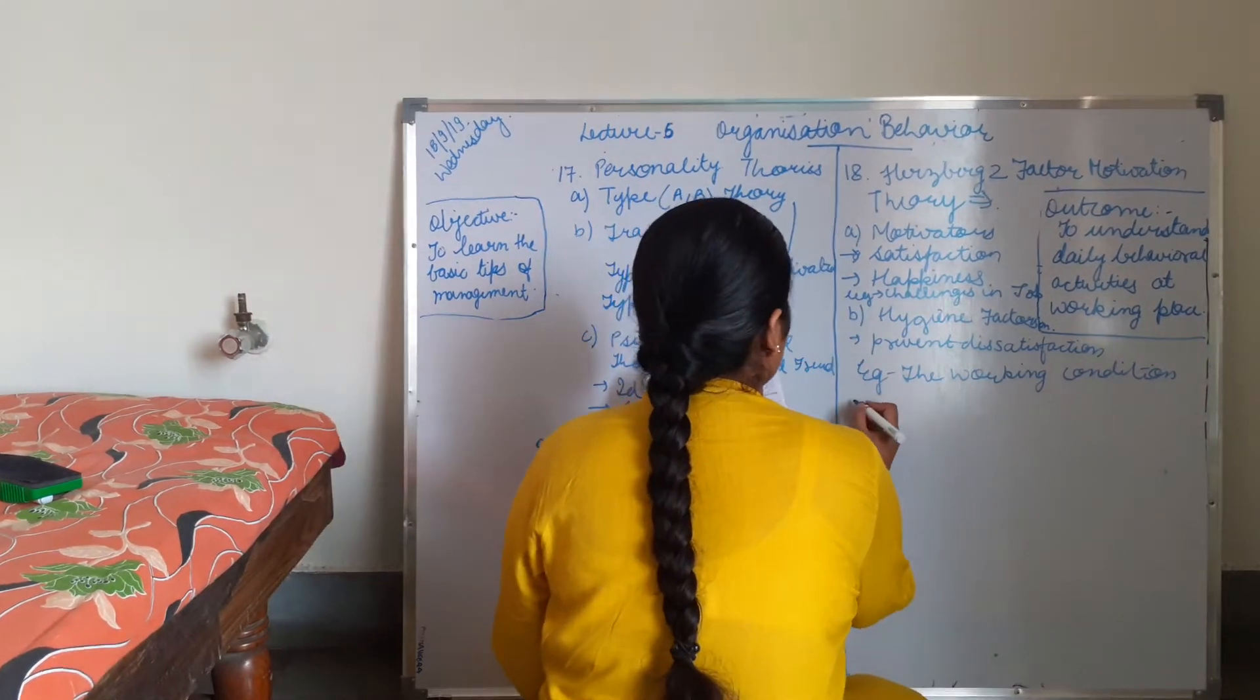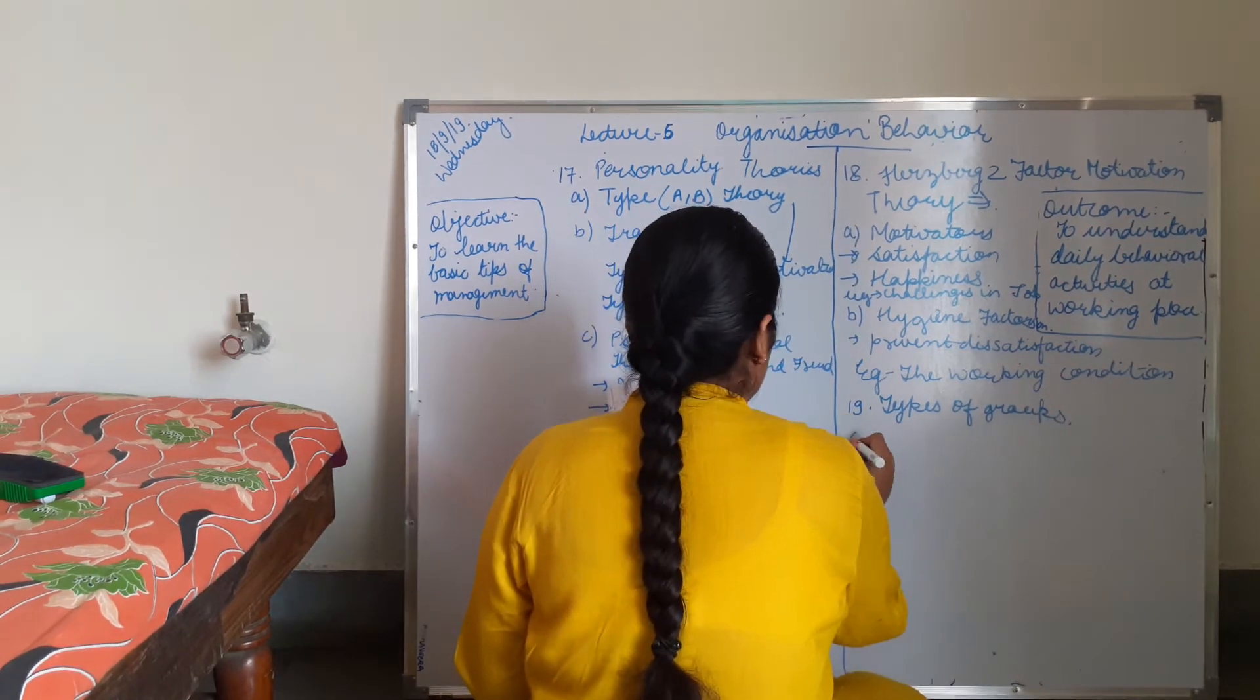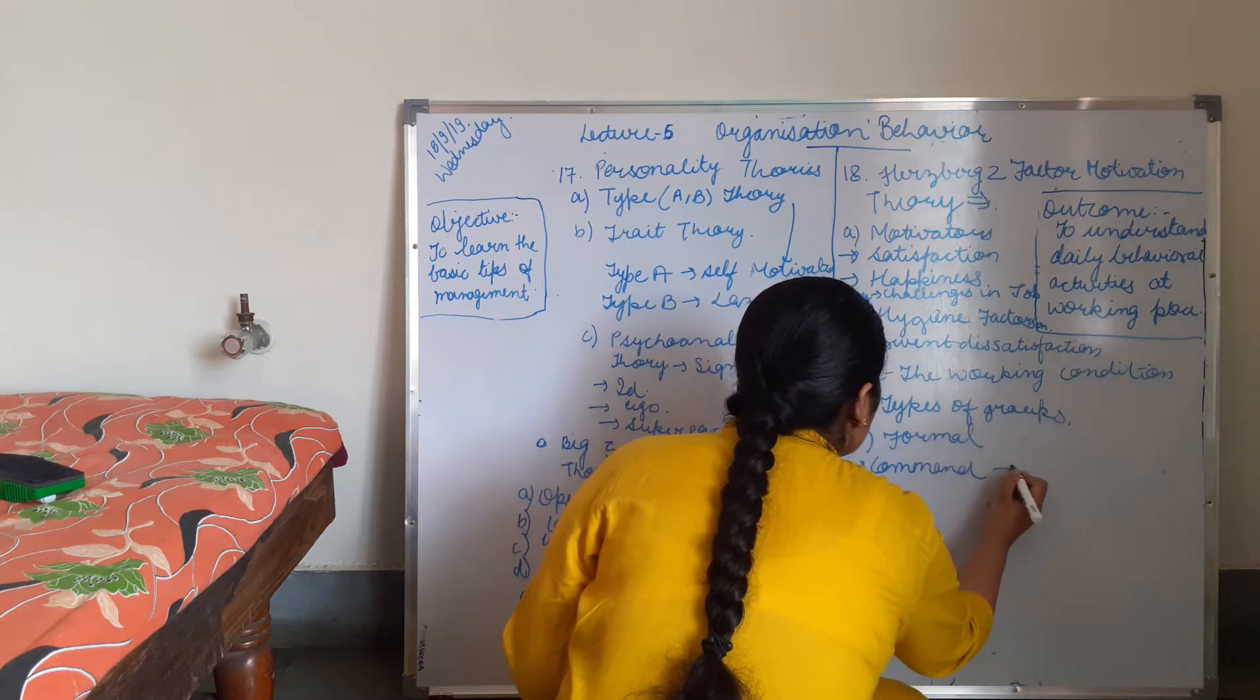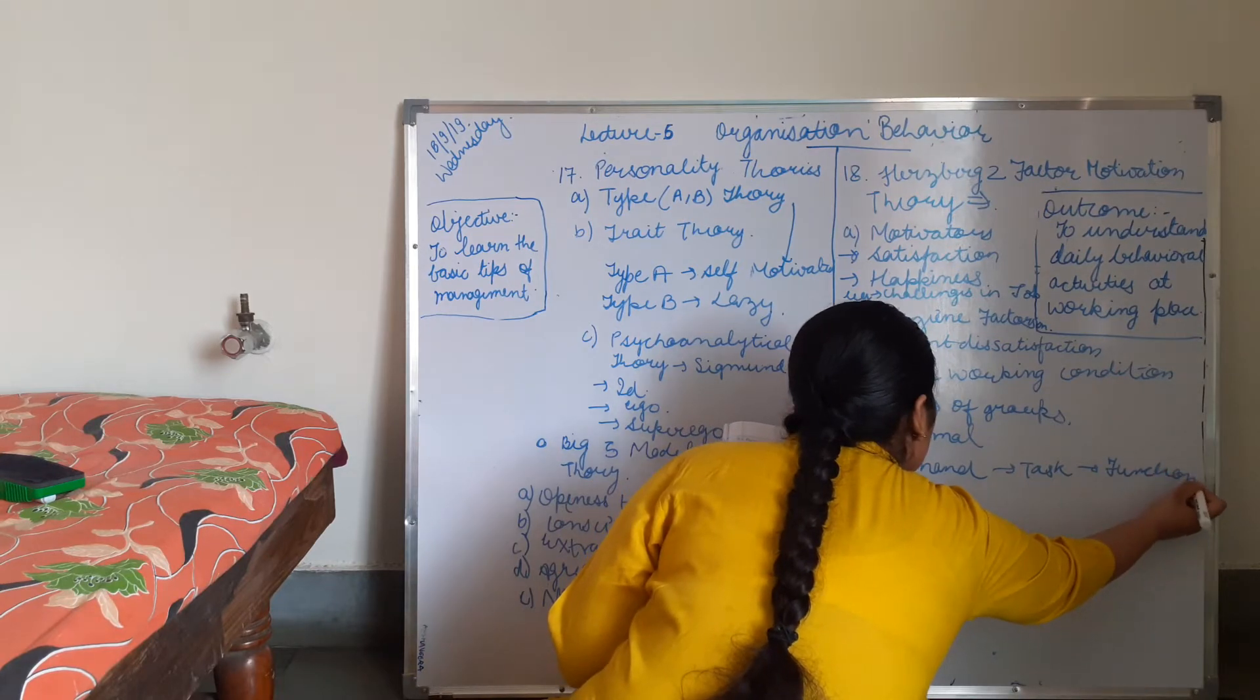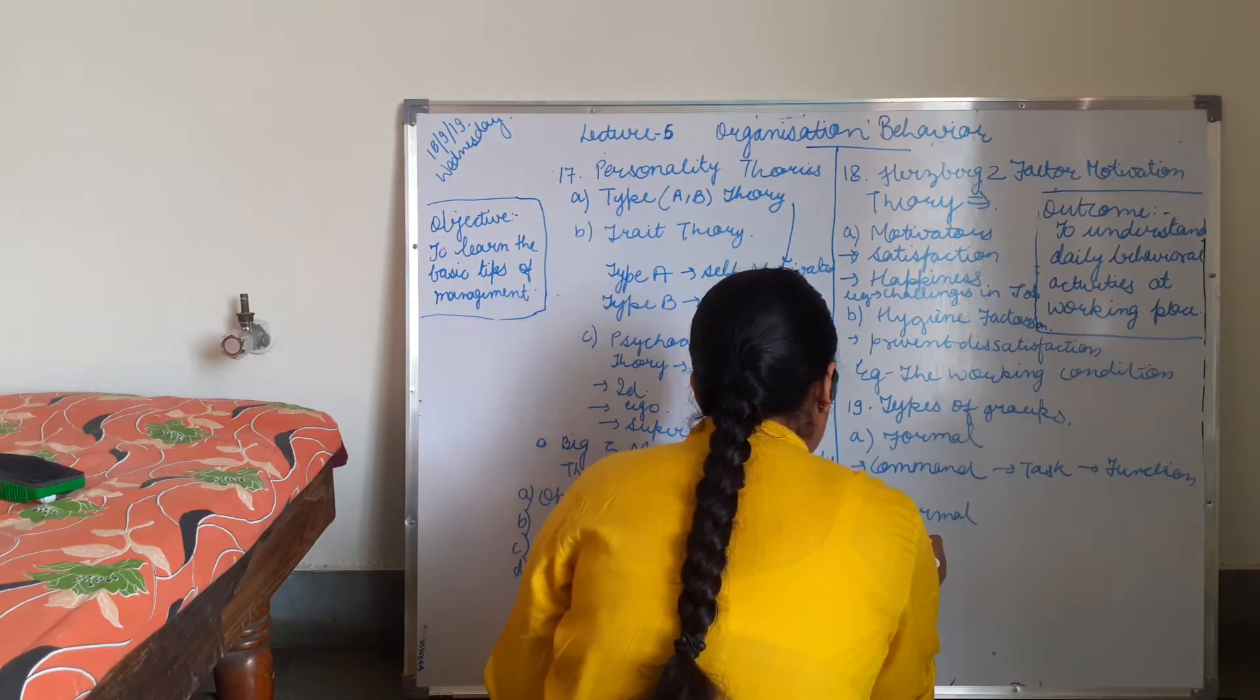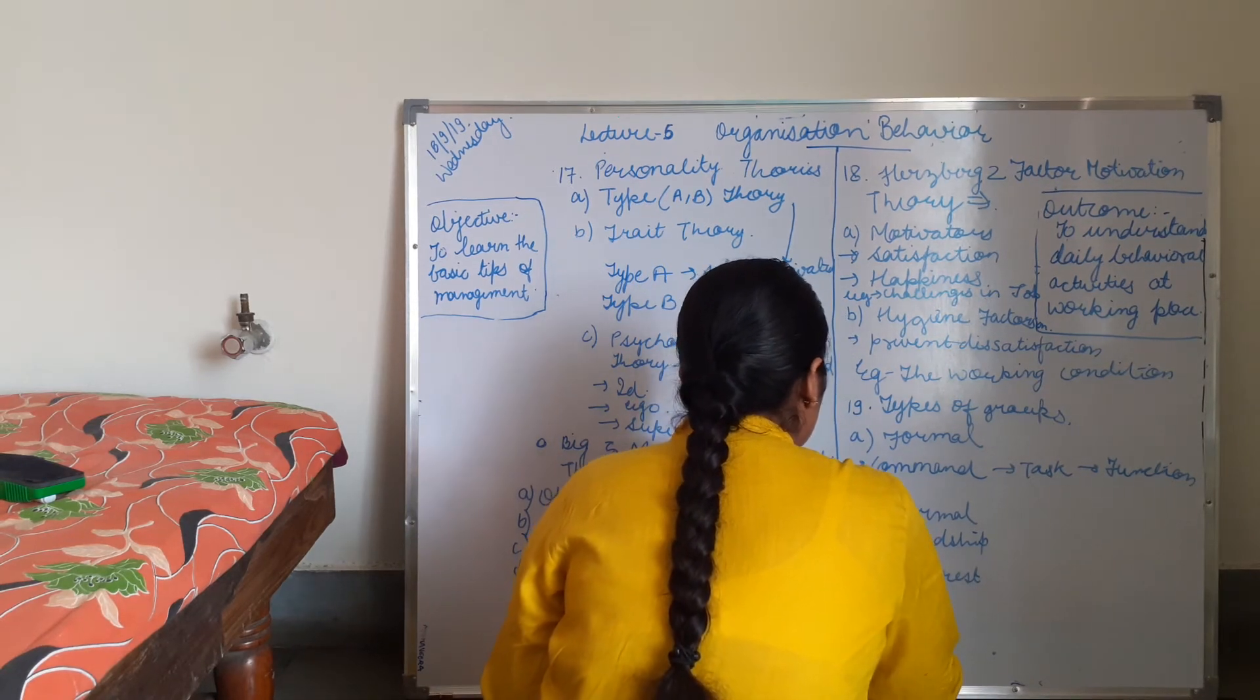Now the types of groups. A is Formal Group: give commands, give tasks, give functions. B is Informal: friendship, interest, and refuge.